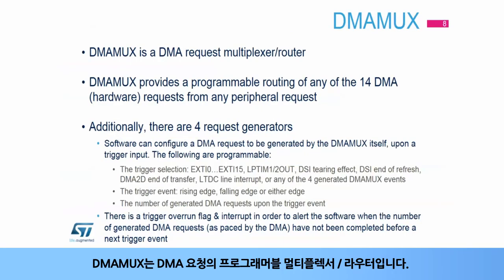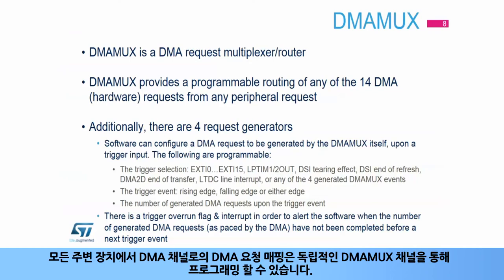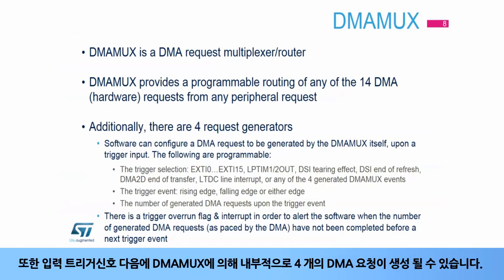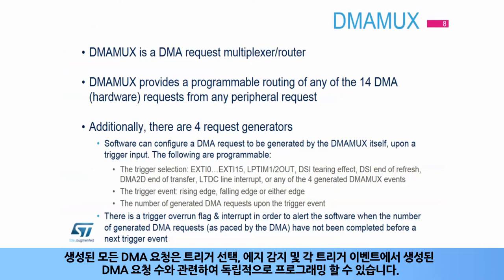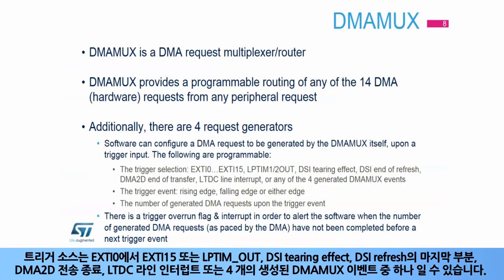DMA MUX is a programmable multiplexer router of DMA requests. The mapping of DMA requests from any peripheral to DMA channels is programmable via independent DMA MUX channels. Additionally, up to four DMA requests may be internally generated by the DMA MUX following an input trigger signal. Any generated DMA request is independently programmable in terms of the trigger selection, the edge detection,